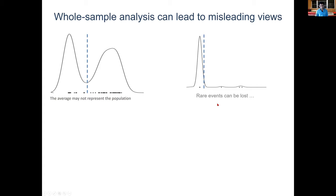Another major issue is that bulk data can hide bimodal distributions. In reality, some cells might express a gene at high levels while others express it very little, but the bulk profile gives you an average that completely misses this bimodality. Rare events can also be lost — the distribution of average values gets pulled toward the mean, hiding individual cells with overwhelmingly strong signal for a particular gene.